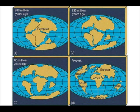Wegener found many kinds of evidence: fossil evidence, rock types, mountain ranges, and ancient climate. For fossil evidence, he collected fossils to support his hypothesis. Fossils of one kind were found in many places, which meant they were once one landmass.